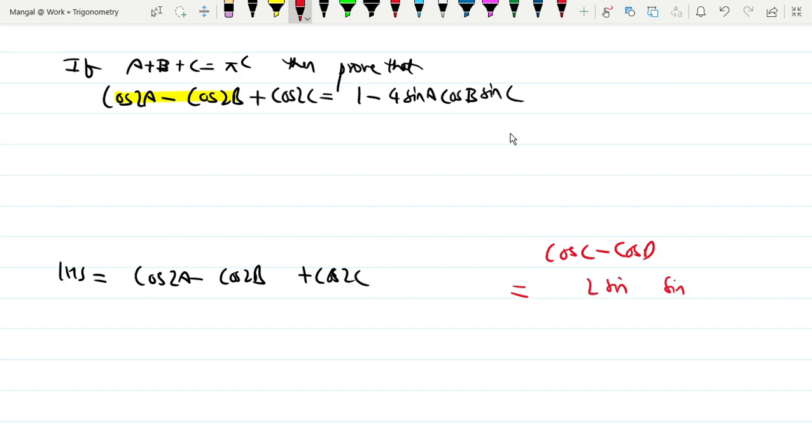So the minus sign is already there. If you're confused, let me explain. The formula is cos(c) - cos(d) equals -2sin((c+d)/2)sin((c-d)/2).